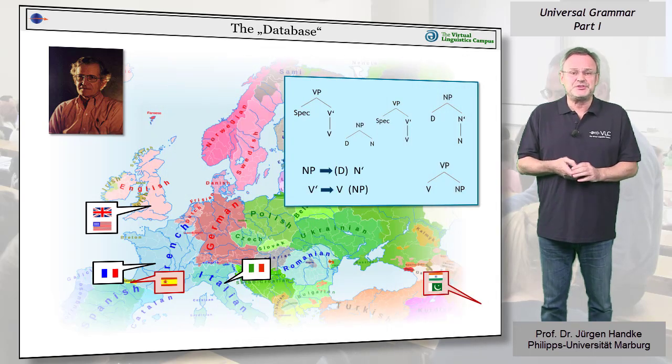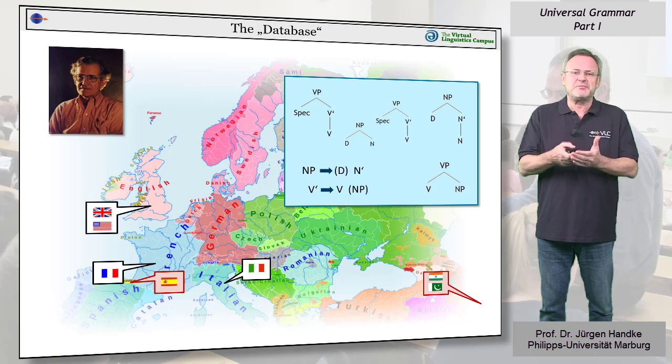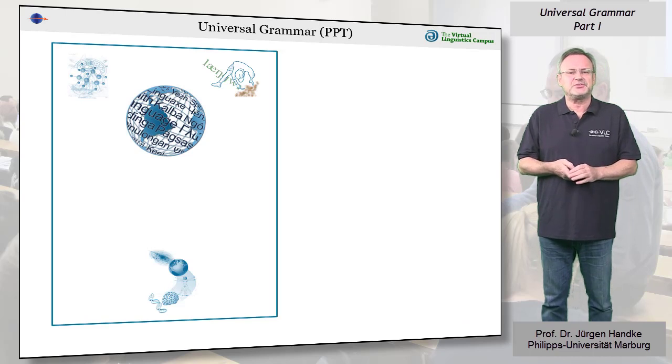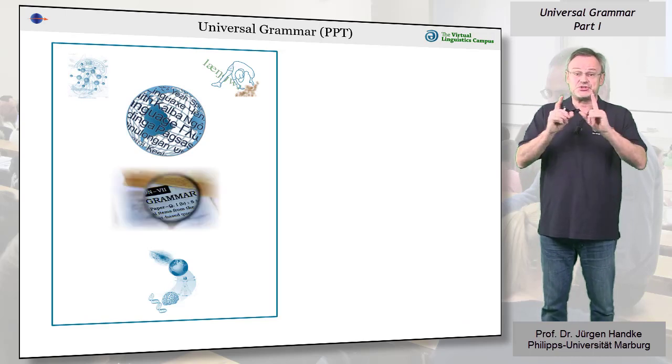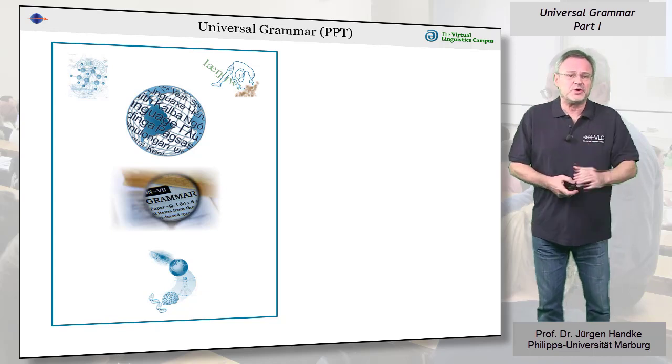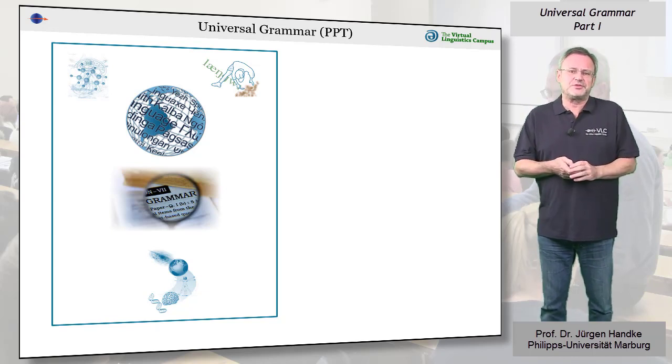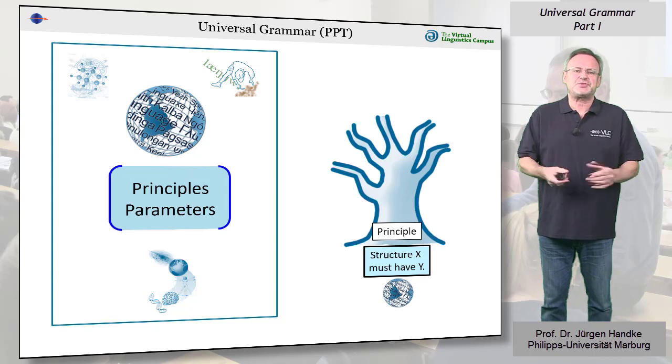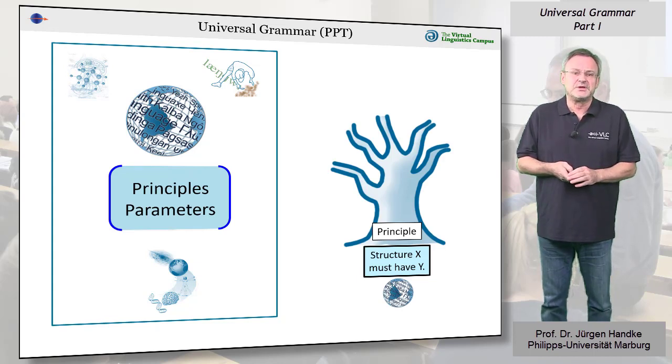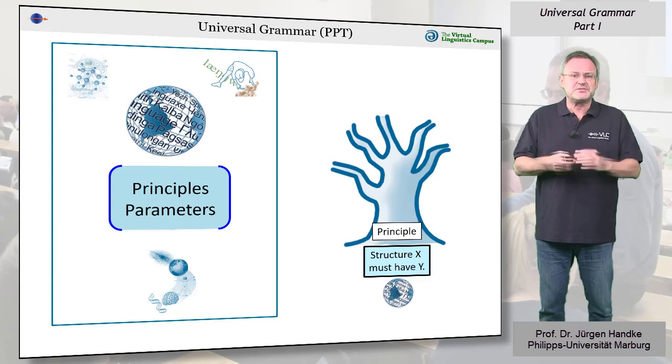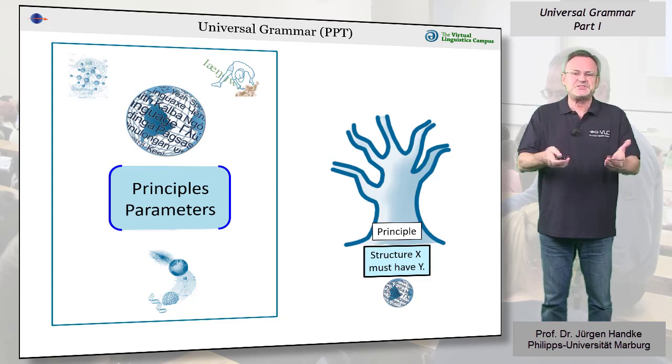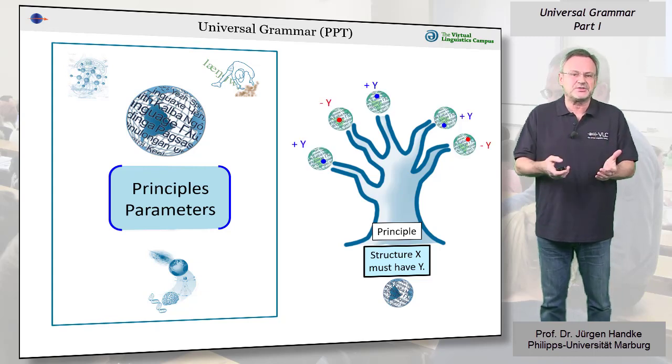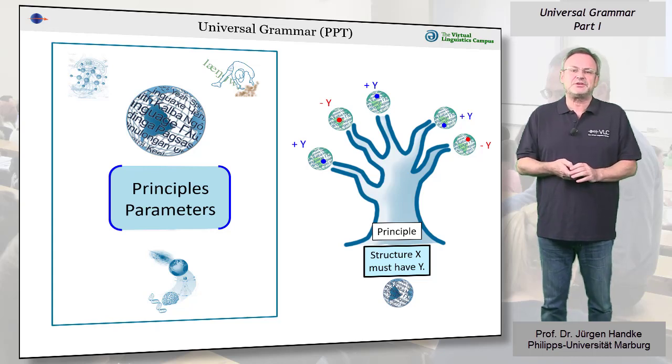These outliers were difficult to reconcile with the universal grammar approach and led to a wholesale revision of the theory in the 1980s. Rather than a single universal grammar for all the world's languages, the new version of the theory set to identify universal principles, such as any structure X must have the property Y, plus parameters that governed the structure of languages. These principles manifested themselves differently in each language and interacted with culture to produce today's parametric variations.